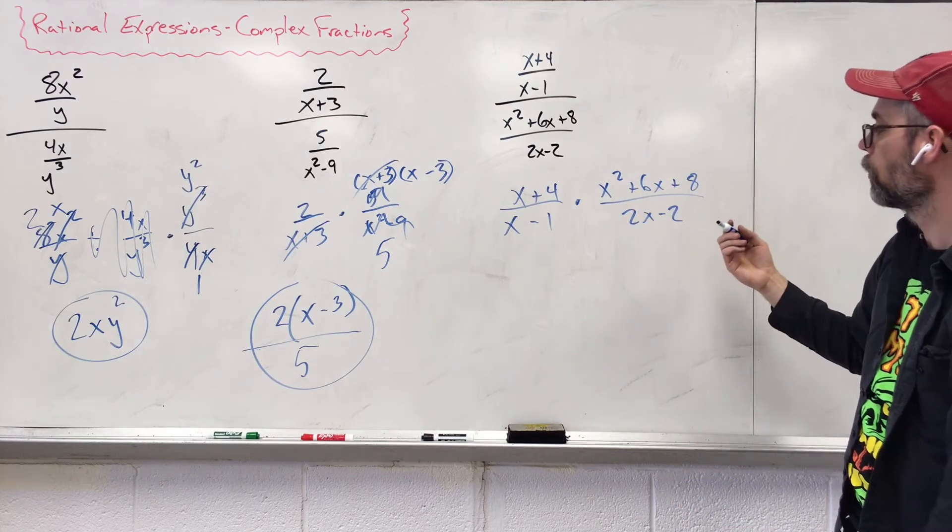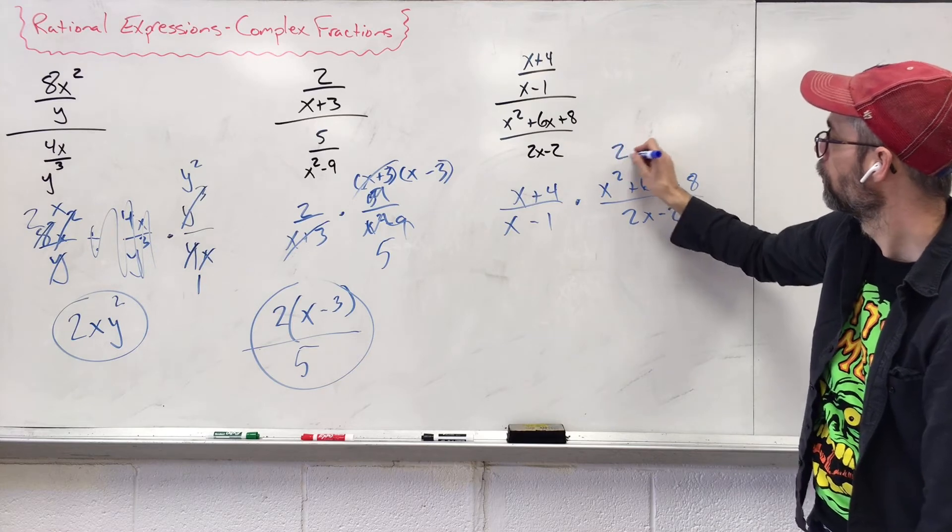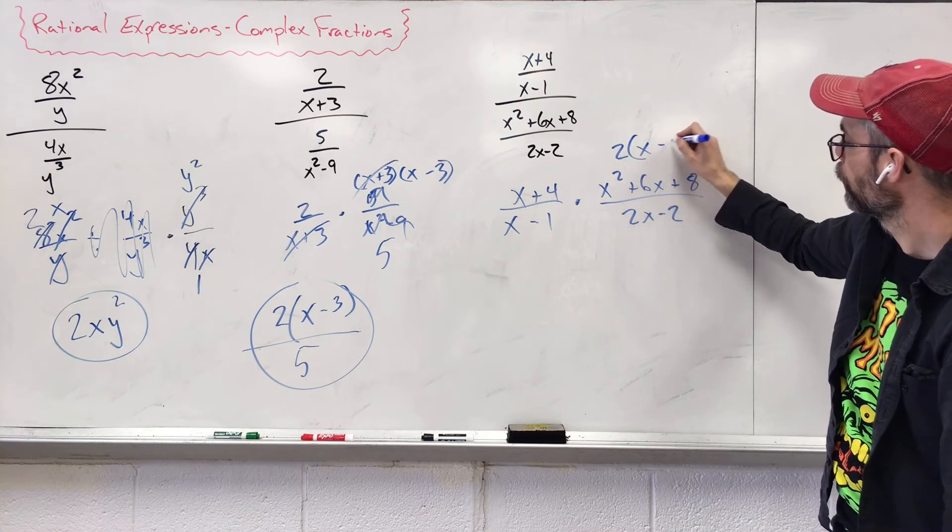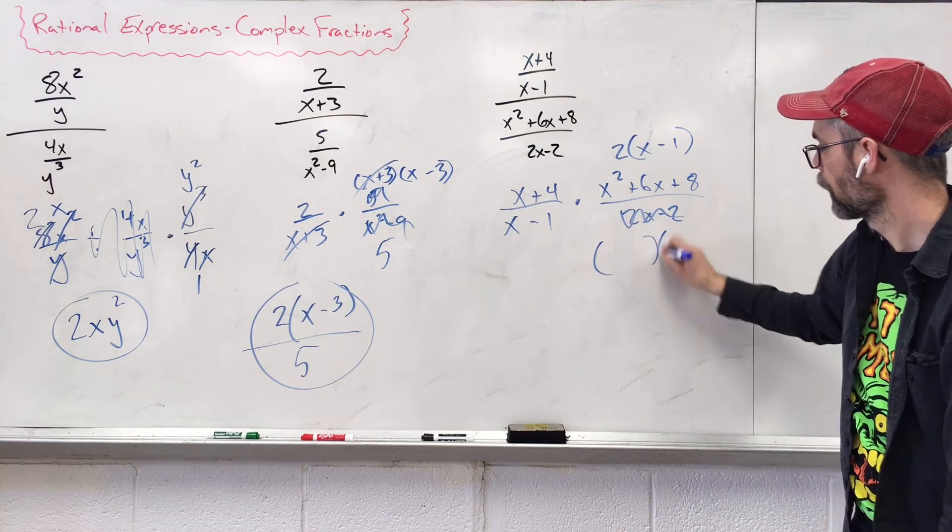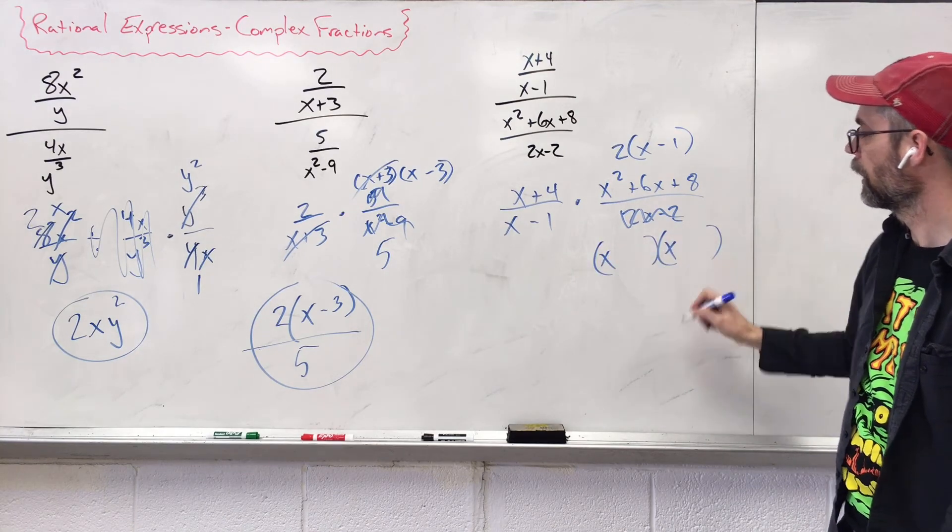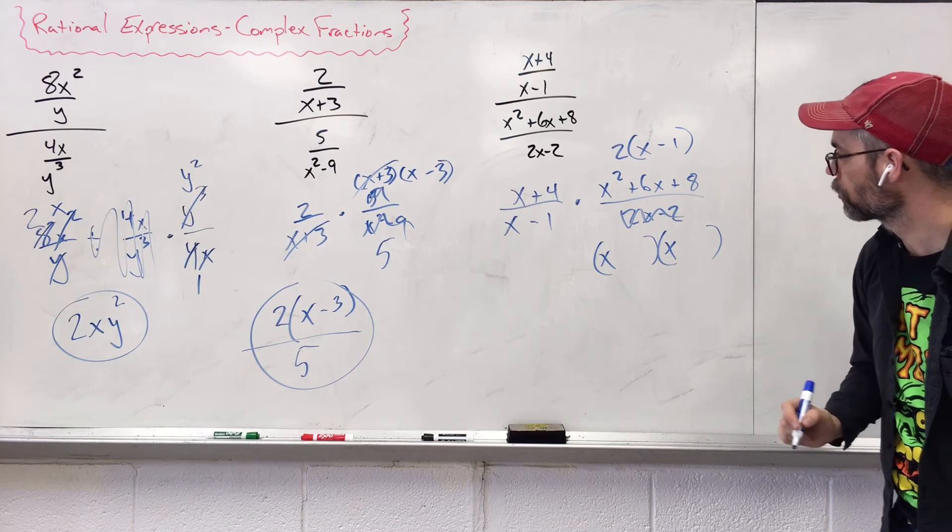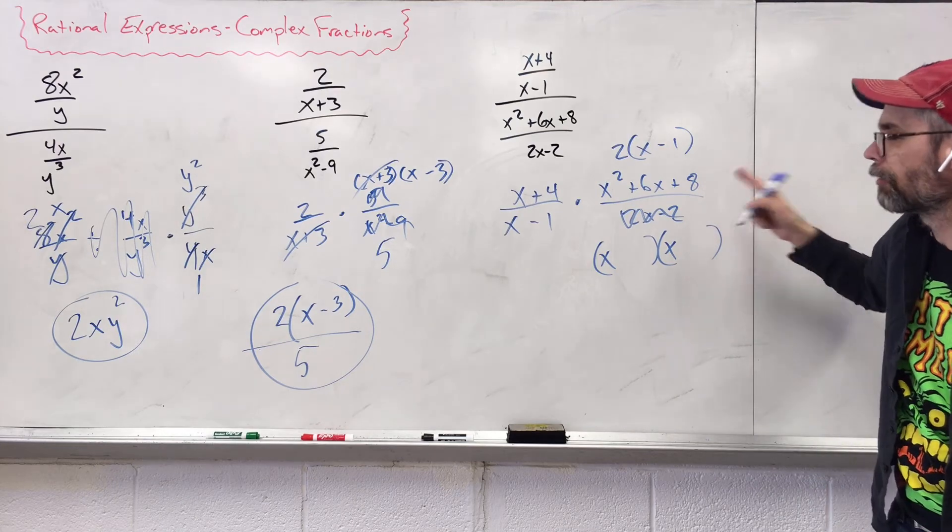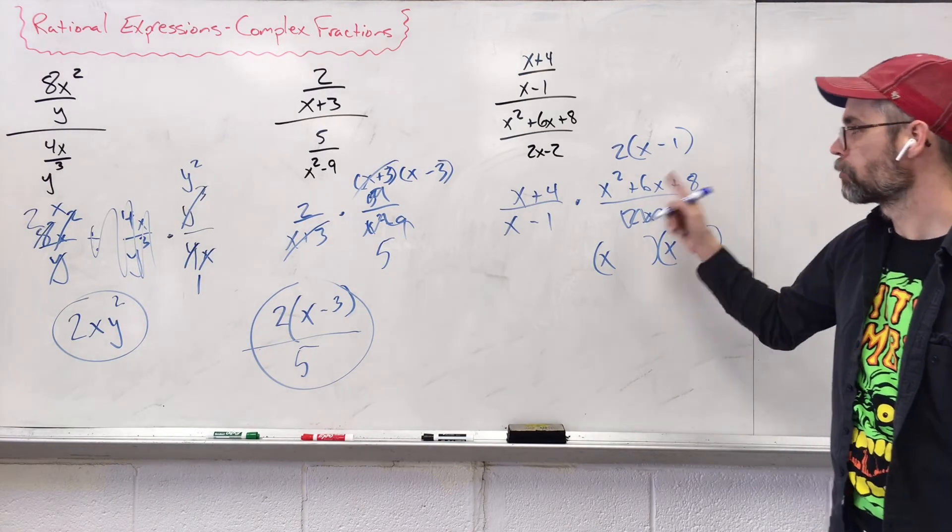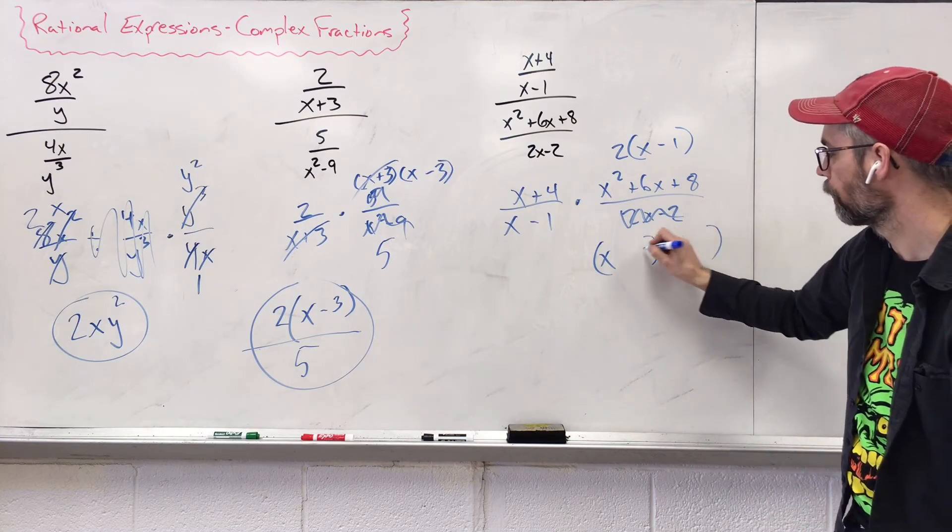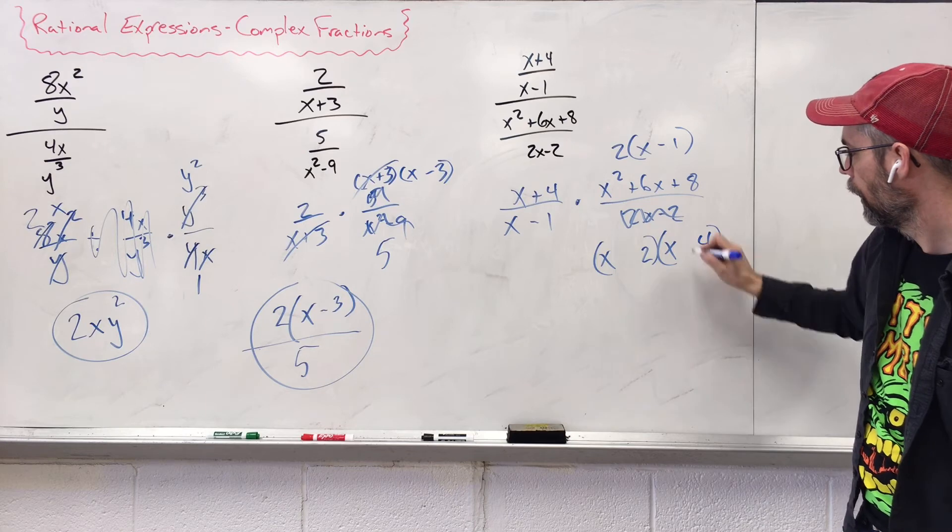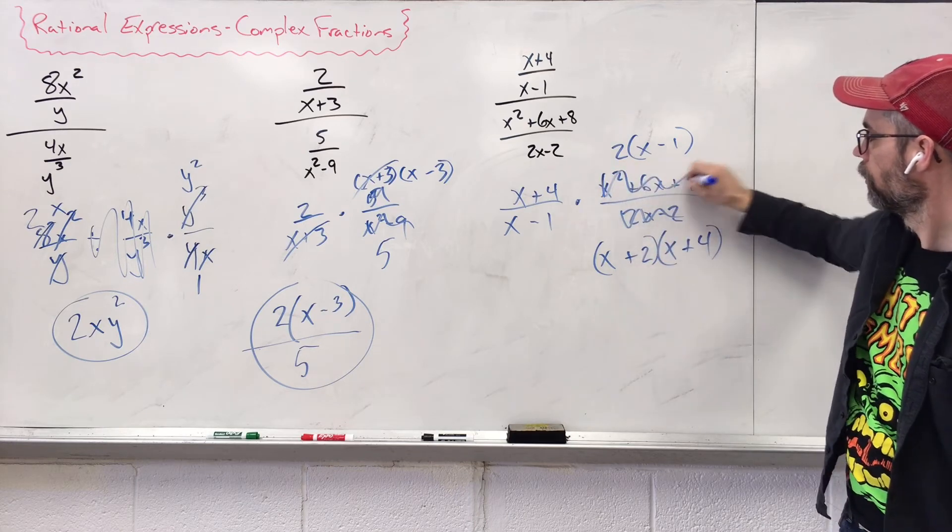2x minus two. We both share two. Inside, you're left with x minus one. On the bottom, two parenthesis x and x give us x squared. What two numbers multiply together give us eight but add or subtract together six? You've got one and eight, and two and four. I like two and four, and plus plus, goodbye.